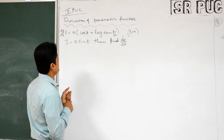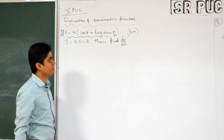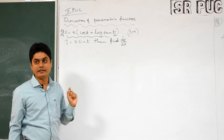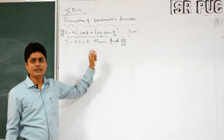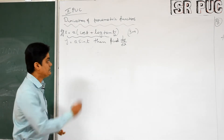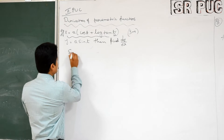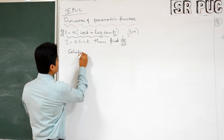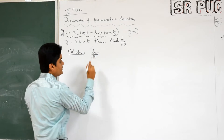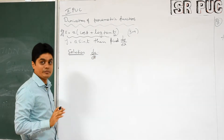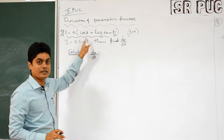The first question: x is equal to a·cos(t) plus log(tan(t/2)), and y is equal to a·sin(t). If you observe here carefully, dx/dt is very difficult compared to dy/dt. So instead of finding dy/dx in the beginning, find out dx/dt first. Don't find dy/dt yet, because dy/dt will be easy to find. We can do that at the end.